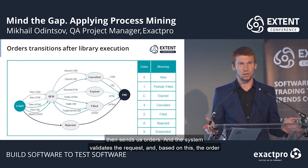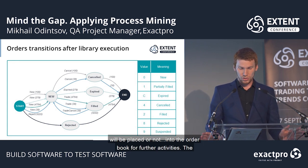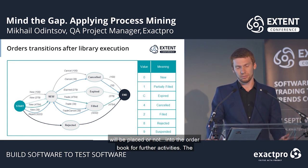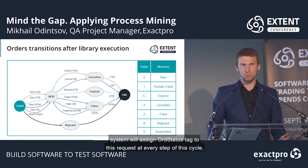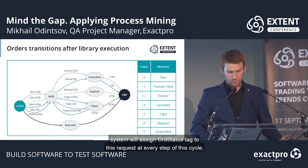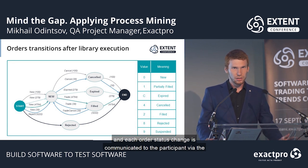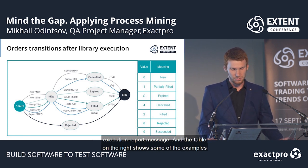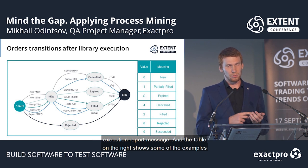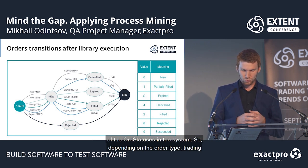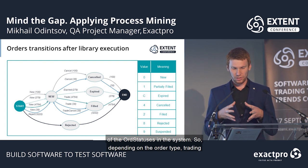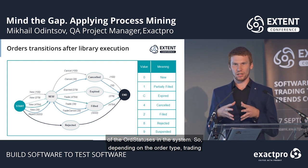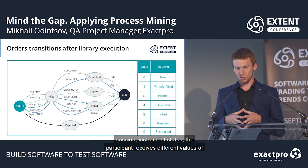The system will assign an ORT status tag to this request at every step of this cycle. Each order status change is communicated to the participant via the execution report message. The table on the right shows some examples of the ORT statuses in the system. Depending on the order type, trading session, and instrument status, the participant receives different values of ORT status and exact types in the execution report messages.